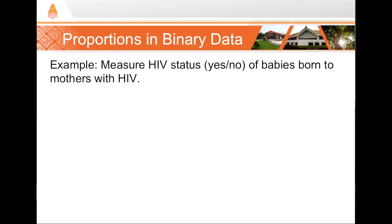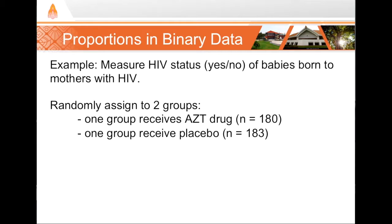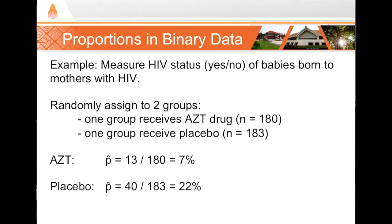Here's a quick example. We have two groups in a clinical trial: babies born to mothers with HIV who were given the antiretroviral drug AZT — our treatment group with 180 babies — and babies born to mothers with HIV who were given a placebo, our control group with 183 babies. We test HIV status — binary, positive or not positive — in those babies. Our treatment group had 13 HIV-positive babies, giving p-hat of about 0.07, reported as 7%. The placebo group had 40 HIV-positive babies, giving p-hat of about 0.22, reported as 22%.